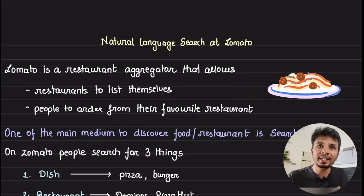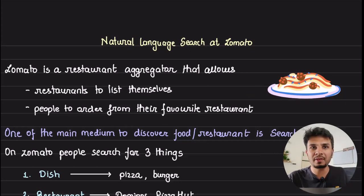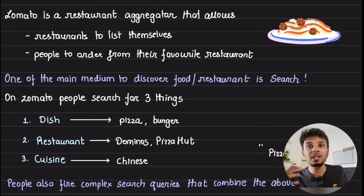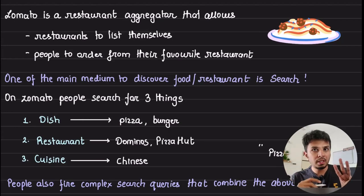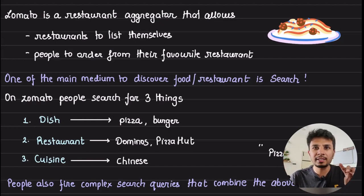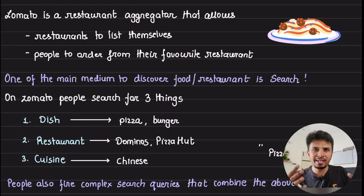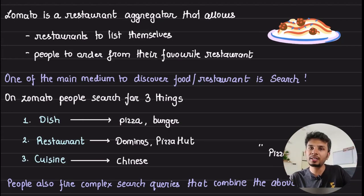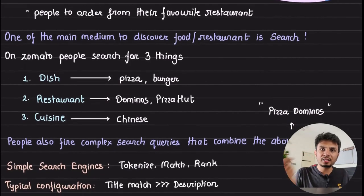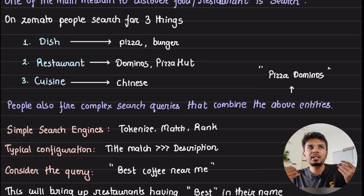Zomato is a restaurant aggregator which allows restaurants to list themselves on the platform while also allowing people to place orders from their favorite restaurant. One of the main mediums for people to discover food, dishes, and restaurants is through the search bar. Zomato allows people to search for three typical entities: first, a dish — like pizza, burger, or paneer butter masala; second, a restaurant — like Domino's or Pizza Hut; and third, a cuisine — like Chinese. But since the search bar is an open text box, people can pass in any query they want.